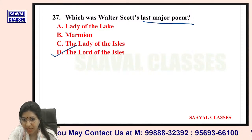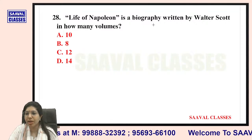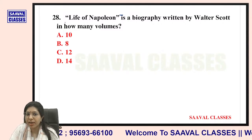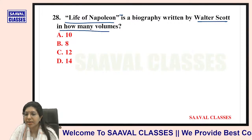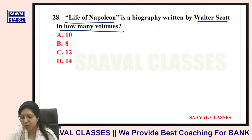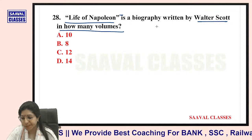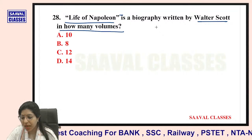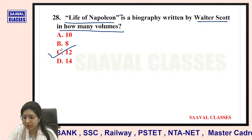Question number twenty-eight: Life of Napoleon is a biography written by Walter Scott in how many volumes? Options are 10, 8, 12, or 14. It exists in 12 volumes — bilkul sahih.